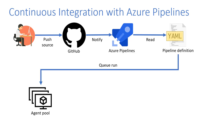Once it reads that file, it will queue what we call a run — a series of tasks to execute — in what we call an agent pool. The agent pool is a bunch of machines ready to receive requests from Azure Pipelines. This can be VMs, physical machines, or Docker containers. The most common way is via virtual machines, but a more interesting way is via containers, which we will see in a few moments.